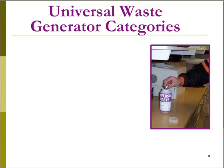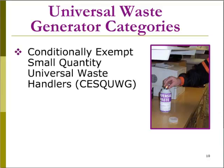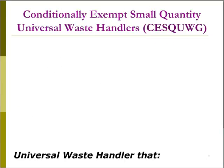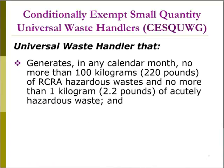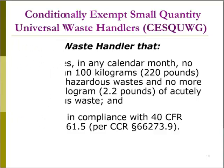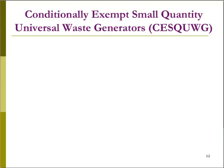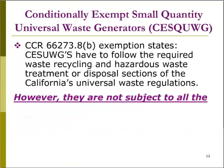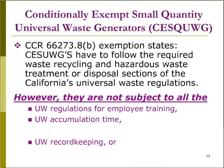Universal waste generator categories include conditionally exempt small-quantity universal waste handlers, or CESQUWGs, and everyone else classified as universal waste handlers. For a business to qualify as a CESQUWG, it must generate less than 100 kg (or 220 pounds) of total federally regulated hazardous waste including all universal wastes except CRTs in any calendar month, and generate less than 1 kg (or 2.2 pounds) of any acutely hazardous waste. Small commercial hazardous waste generators must follow the recycling and disposal parts of the universal waste rule, but are not subject to rules for training, accumulation time, record keeping, or labeling.